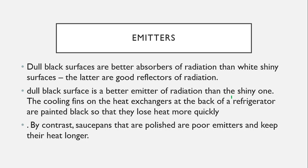Now consider emitters. Dull black surfaces are not only better absorbers — they are also better emitters of radiation than shiny surfaces. For example, the cooling fins on the heat exchanger at the back of a refrigerator are painted black so they lose heat more quickly. By contrast, polished saucepans are poor emitters and keep heat longer. These properties — good emitter, good absorber, good reflector — determine material choice in different applications.